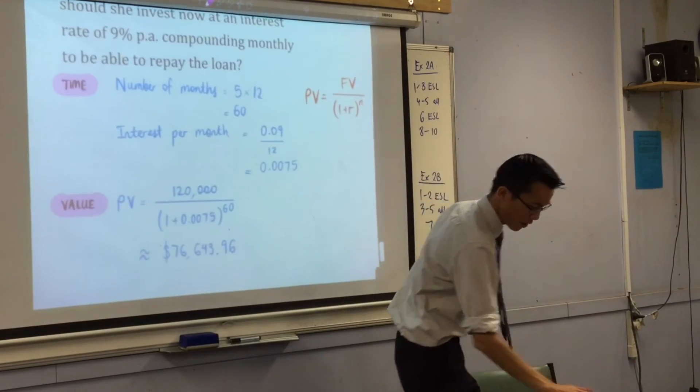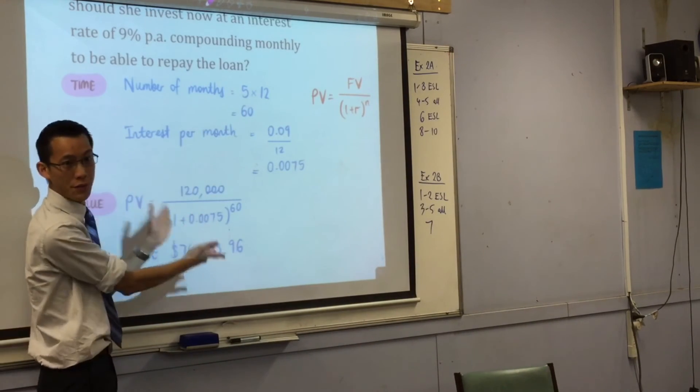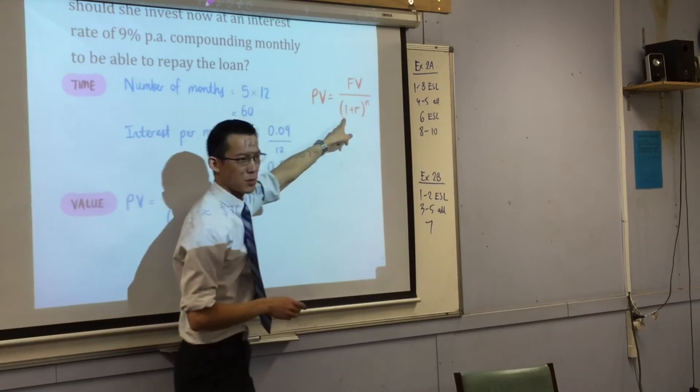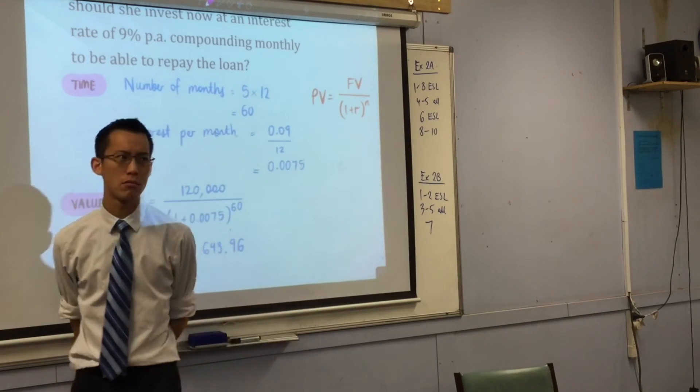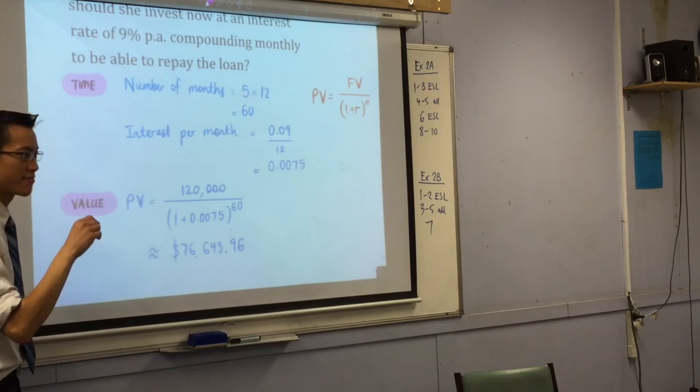And then these are the numbers that I fit into. You can see on the right-hand side, I've quoted it. These are the numbers I fit into my present and future value formula. How did I know to use this one and not the other one? It's asking for how much she invested. Yeah, that's right.